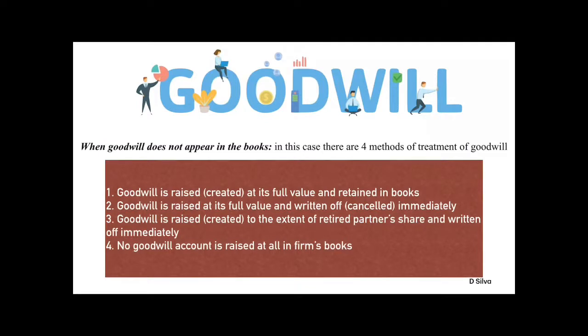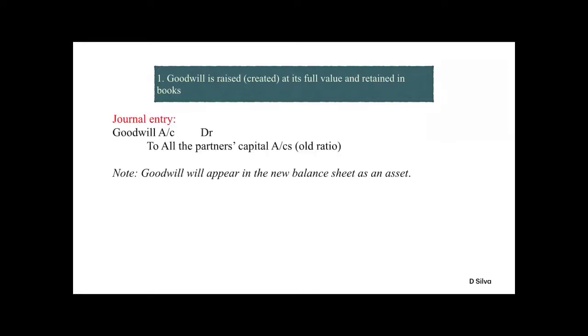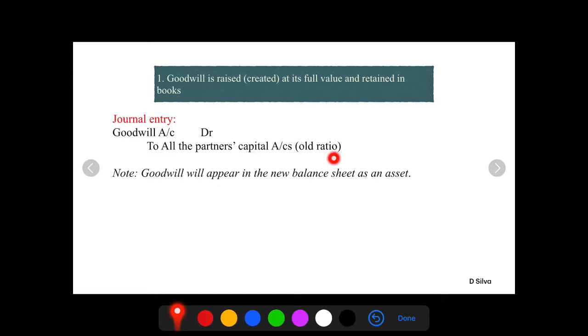We are going to use four different methods of treatment of goodwill. The first category: goodwill is raised at its full value and retained in books. The journal entry will be Goodwill Account debit to all partners' capital accounts in their old ratio. Remember that this goodwill will appear in the new balance sheet as an asset.